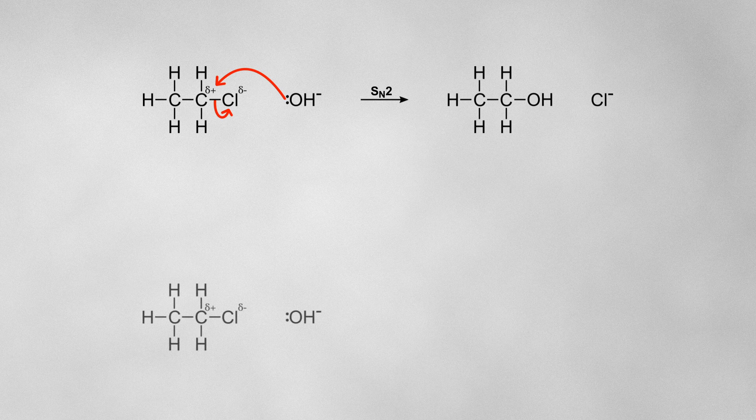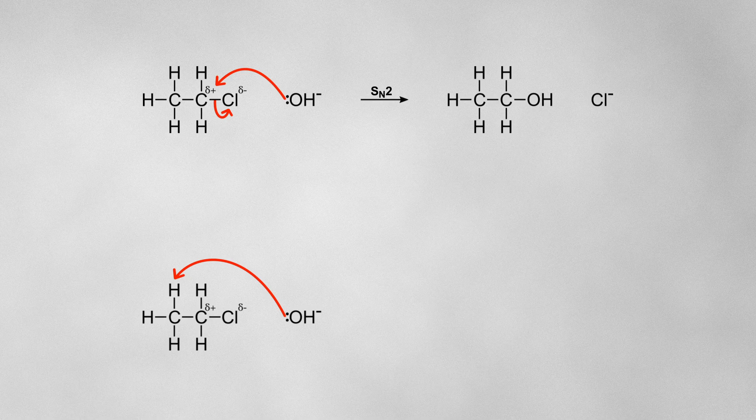However, if the hydroxide behaves as a base, it will remove a hydrogen from the carbon adjacent to the carbon which is bonded to the halogen. Just like in the E1 mechanism,